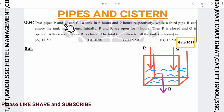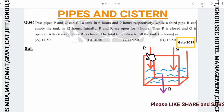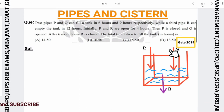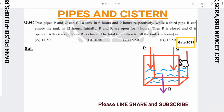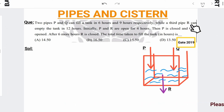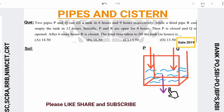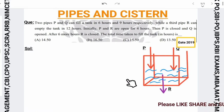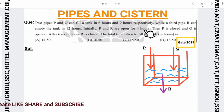Two pipes P and Q can fill a tank in 6 hours and 9 hours respectively, while a third pipe R can empty the tank in 12 hours. Initially P and R are open for 4 hours.